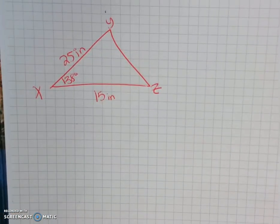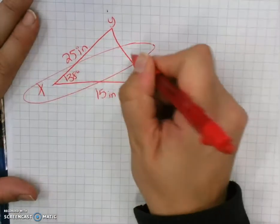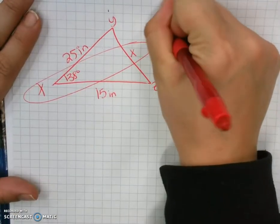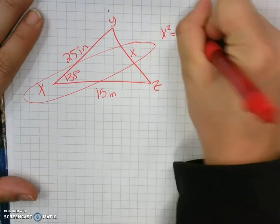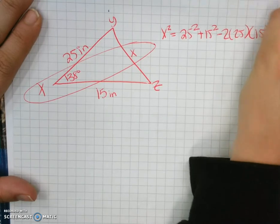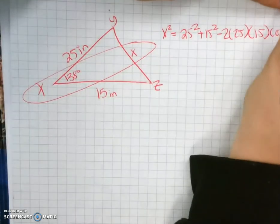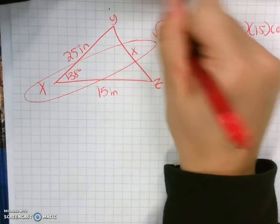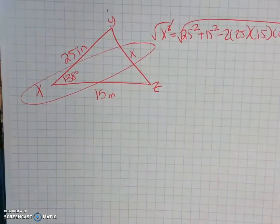So for this problem, we're going to use law of cosines first. X squared equals 25 squared plus 15 squared minus 2 times 25 times 15 cosine 138. Square root, square root, calculator.